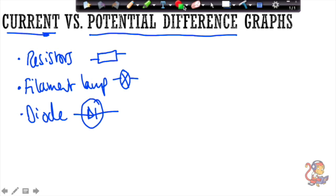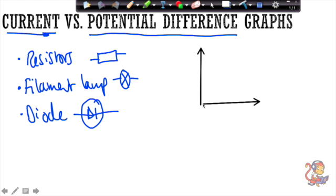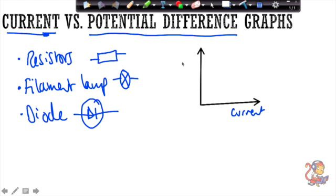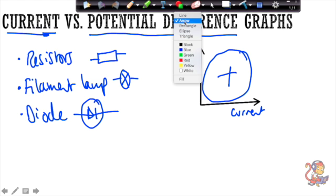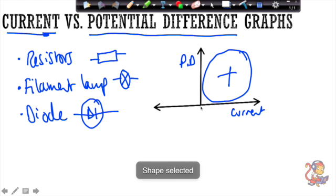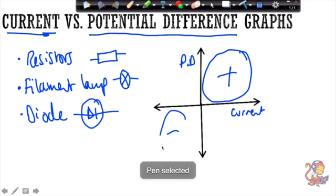If we think about how a normal graph would look, we might draw two axes looking at current against potential difference. But the graph for these components looks a little bit more complicated. As well as the positive region, these graphs will also look at the negative numbers. So they'll look a little bit like this, including this negative region here. These current-potential difference graphs have this kind of cross shape, and you need to recognise these.